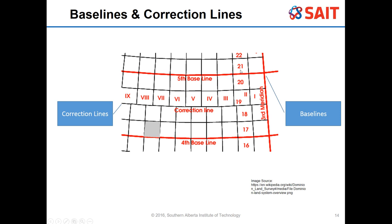Their actual land would be significantly smaller the further north they went. Since they were offering settlers the same benefits, they couldn't just reduce land because you were moving north. Instead of reducing everybody's land as we go north, they wanted to maintain a square shape. So they added in something called a correction line, using baselines and correction lines.